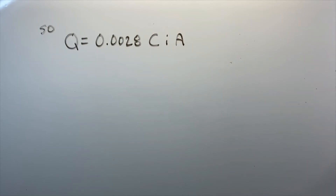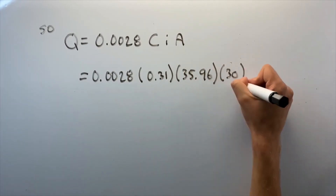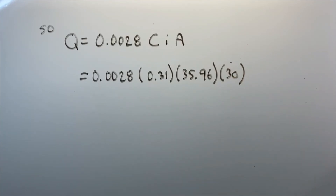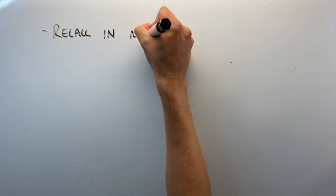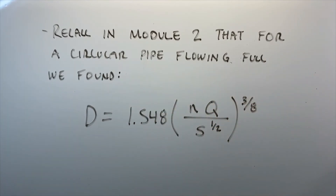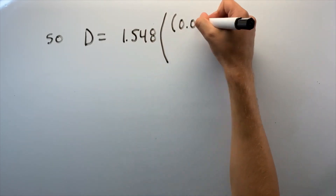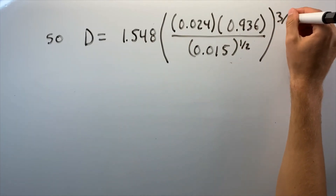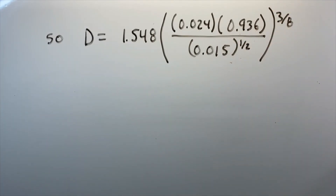We can then use our intensity in the rational formula for flow: Q = 0.0028 × 0.31 × 35.96 × 30, giving us a flow of 0.936 m³/s. Recalling from Module 2 the formula for a circular pipe flowing full, D = 1.548 × (N × Q / S^(1/2))^(3/8), and calculating that gives us a diameter of 0.820 meters.